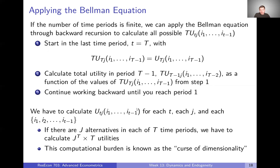Essentially, we're calculating the utility in time period T of alternative J conditional on all past choices — for every T, every J, and every possible sequence of past choices. If we have J alternatives in each of T time periods, we have to calculate J raised to the T total possible sequences of choices, times T different utilities. That is a lot to keep track of, and that's why dynamic problems become so much more computationally and theoretically difficult. This computational burden is known as the curse of dimensionality.